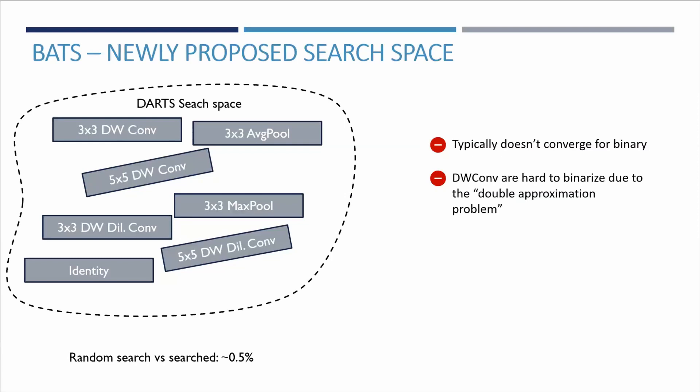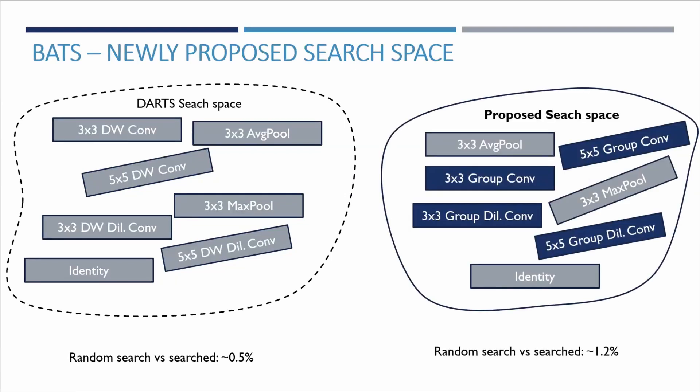Furthermore, the one-by-one convolutional layers and the bottleneck blocks were already shown to be hard to binarize because of a feature compression that amplifies the high information degradation already caused by binarization. With this in mind, we propose a new search space constructed from a binary-first point of view that avoids or alleviates these shortcomings.